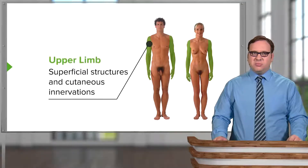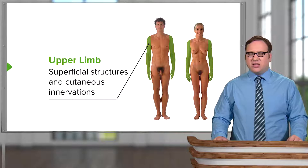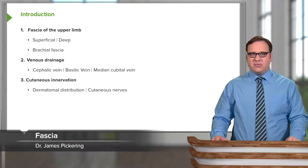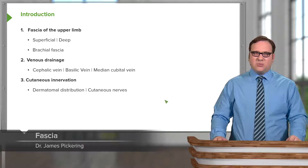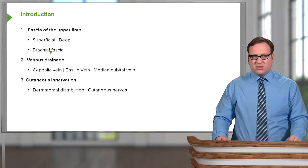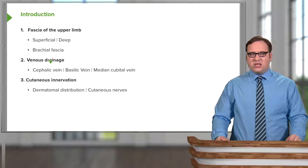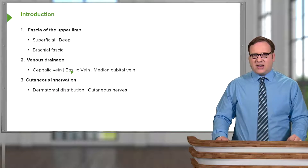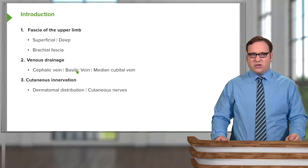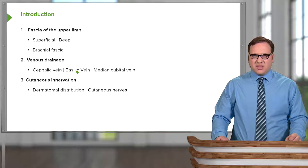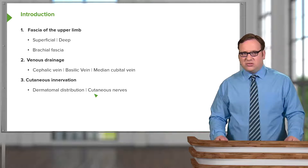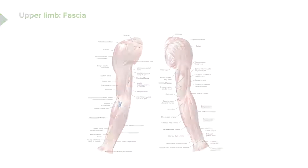In this lecture, we're going to look at the superficial structures and cutaneous innervation of the upper limb. We're going to look at the fascia of the upper limb — this connective tissue layer — including the superficial and deep fascia. We'll look at the brachial fascia, the venous drainage including the cephalic vein, the basilic vein, and how they run into the axillary vein, plus the median cubital vein. We'll then look at the cutaneous innervation, dermatomal distribution, and specific cutaneous nerves.